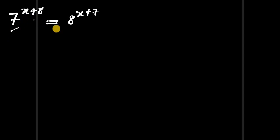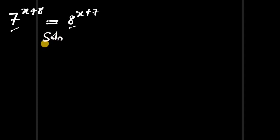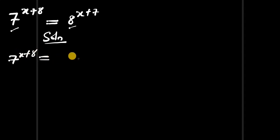7 power x plus 8 equals to 8 power x plus 7. How to solve for the value of x? We have a solution. 7 power x plus 8 equals to 8 power x plus 7.